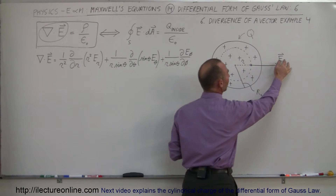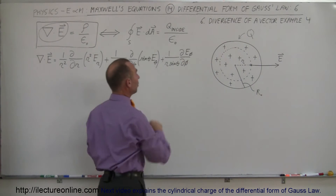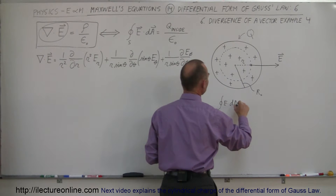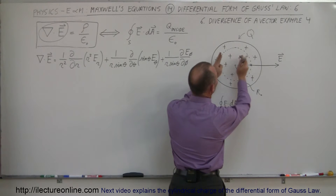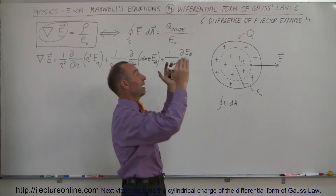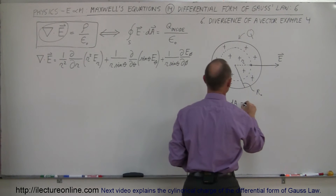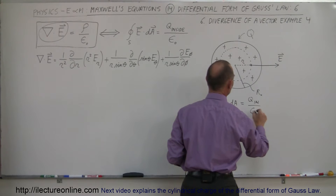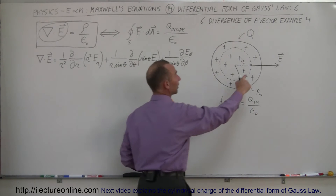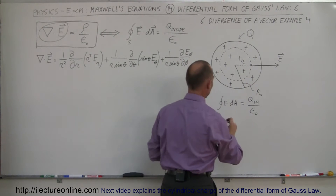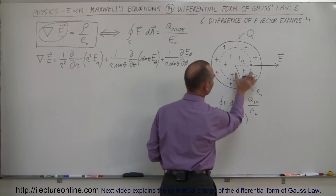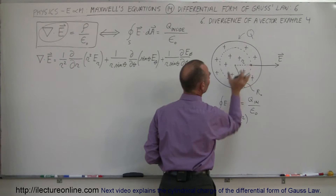From Gauss's Law, we know that the surface integral of E dot dA equals Q inside divided by epsilon sub nought. The Gaussian surface is drawn here as a dashed line, representing a sphere inside the bigger sphere. E dot dA is simply the strength of the field times the surface area of that Gaussian sphere, so it equals E times 4 pi r squared, where r is the distance from the center to the Gaussian surface.